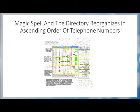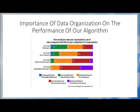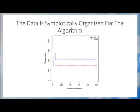Do you understand the problem? Imagine you cast a magic spell and the directory reorganizes in ascending order of telephone numbers — now your task becomes very trivial. Our discussion elicits the importance of data organization on the performance of our algorithm or program. We can expect good performance from an algorithm only when the data is symbiotically organized for the algorithm to use it effectively.